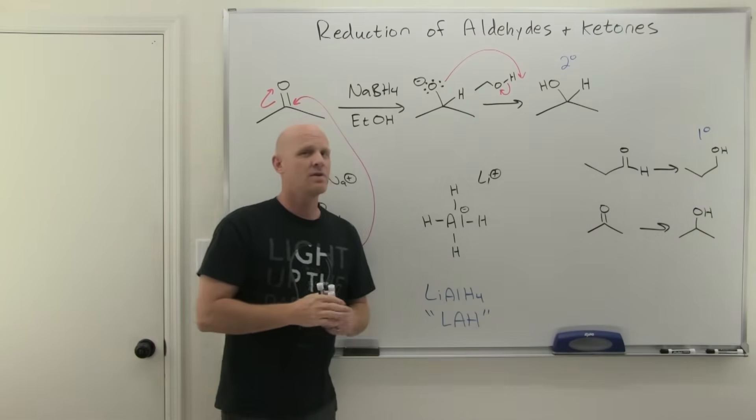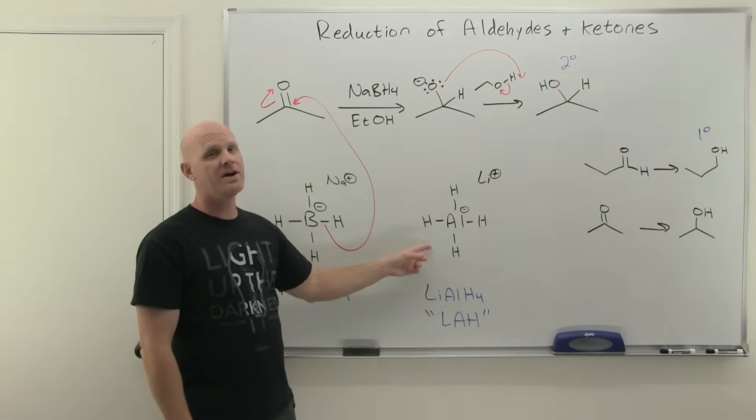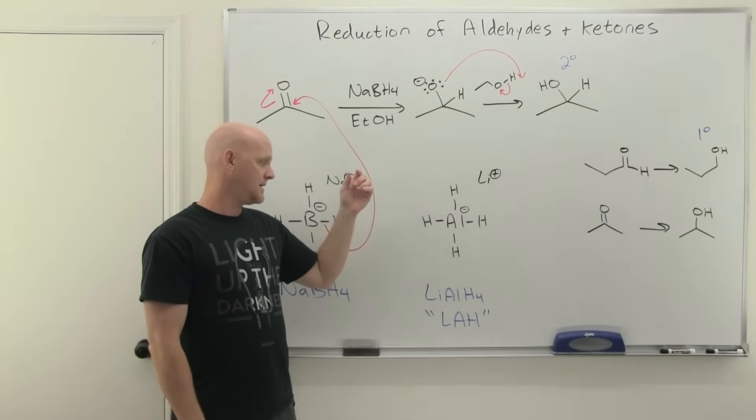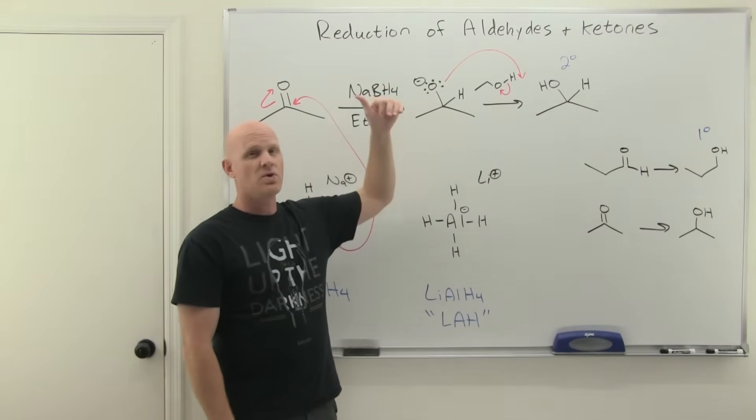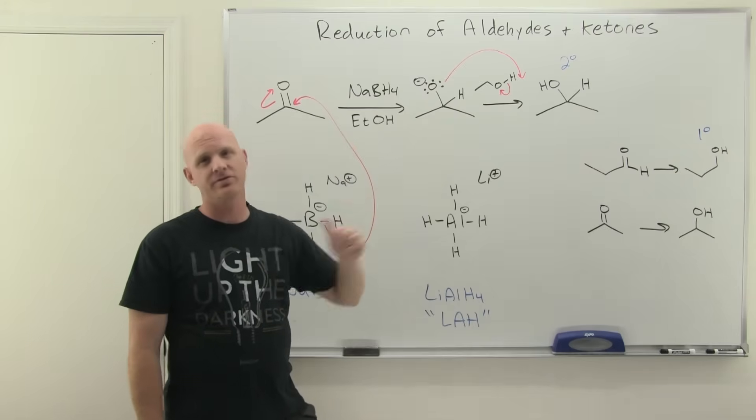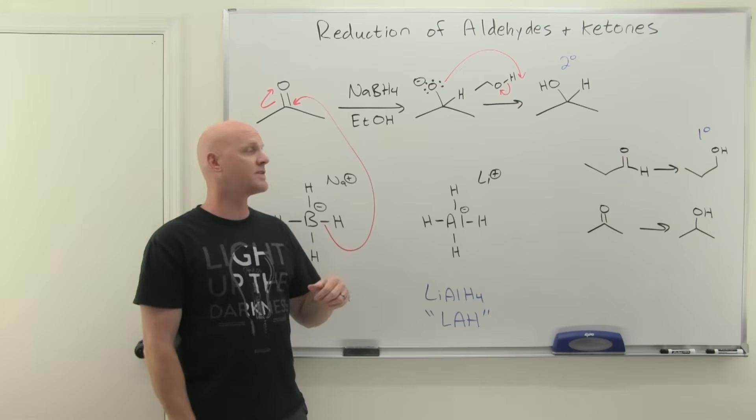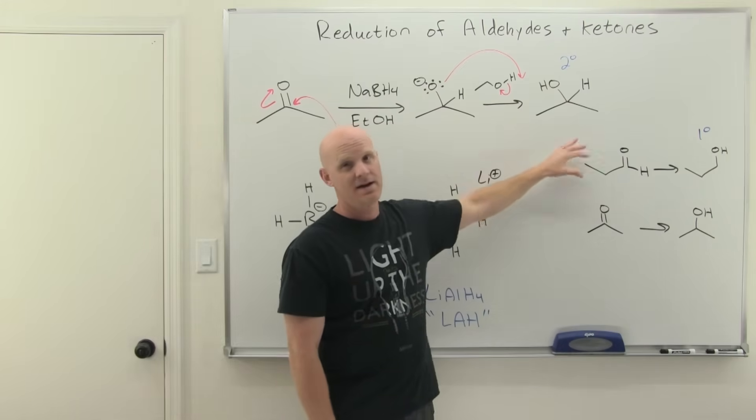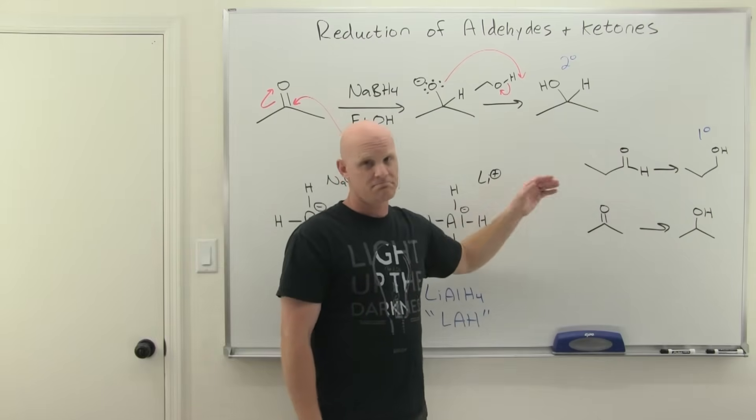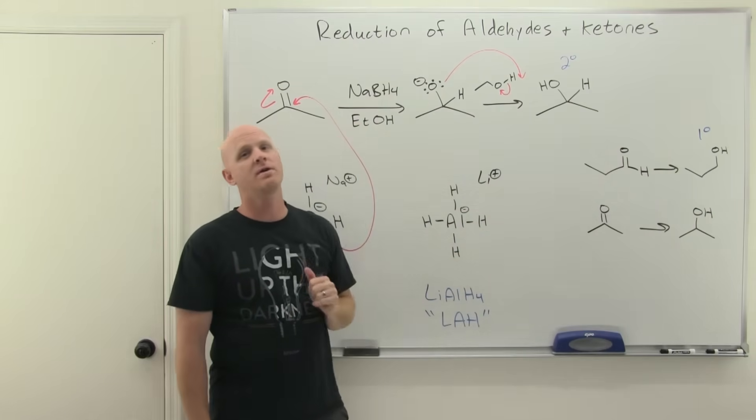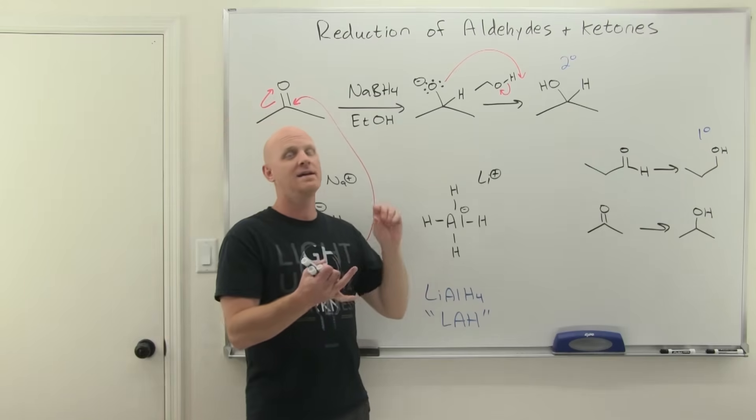This is not all these guys reduce. Lithium aluminum hydride being more reactive can reduce carboxylic acids and carboxylic acid derivatives. Sodium borohydride can reduce a few of the more reactive carboxylic acid derivatives, including acid halides and acid anhydrides.